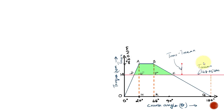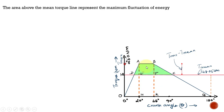Now let us find the maximum fluctuation of energy. The maximum fluctuation of energy is represented by the area which lies above the mean torque line, which we now know exactly as 148.05 Newton meters. We also know T_max = 260 Newton meters. The area above the mean torque line — the entire region DAPC — represents the maximum fluctuation of energy, ΔE.